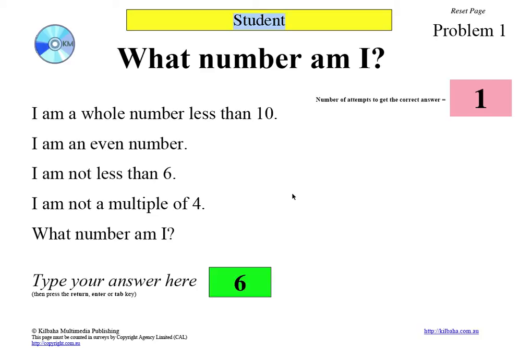Obviously the answer is 6. The box turns green to indicate that the answer is correct. And up here we see the number of attempts required to get the correct answer.